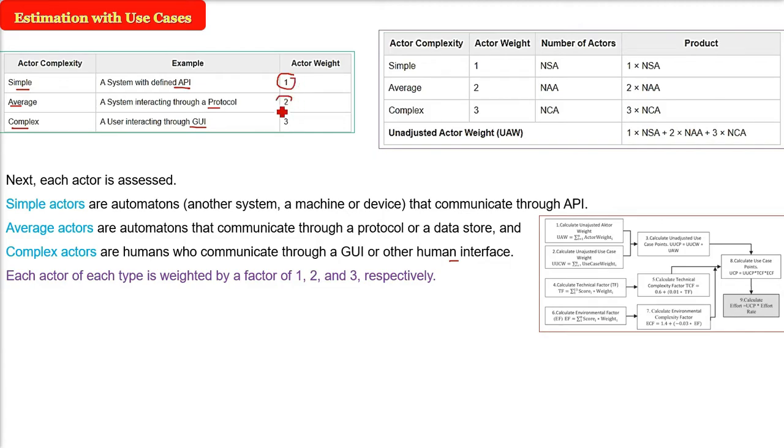We have prescribed weights for each: simple is 1, average is 2, complex is 3. This gives us UAW, unadjusted actor weight. For example, if there are two simple actors, three average actors, and one complex actor: 1×2=2, 2×3=6, 3×1=3. Adding them: 2+6+3=11. This is the UAW.